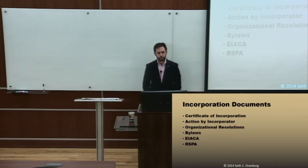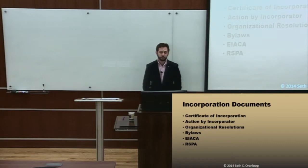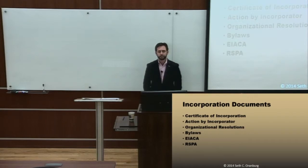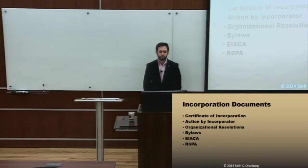The key documents for a corporation would be the Certificate of Incorporation — also known as the Articles of Incorporation in some states — which we file and that creates the corporation. It's typically filed by someone called the incorporator, who is often the attorney in charge. The attorney will then appoint the directors first and then resign in a document called the Action by Incorporator. Then the directors will make their first resolutions in what's called the Organizational Resolutions, where they set up the company, appoint the CEO, CFO, secretary, other officers, and issue restricted stock.